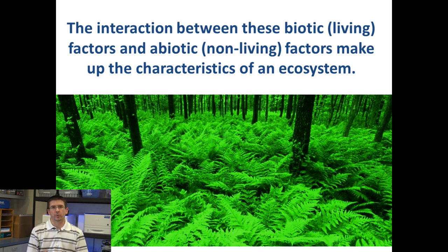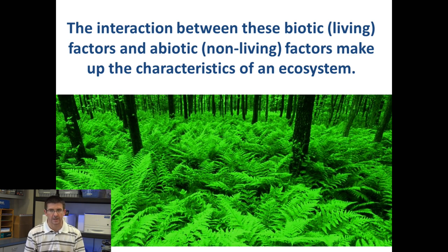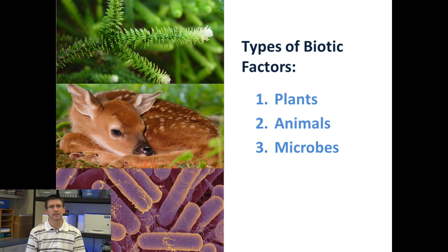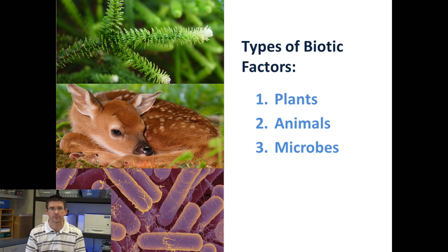We also have another word for these things, and that's biotic and abiotic factors. When we talk about biotic factors in an ecosystem, that's the living things — bio meaning life — and abiotic meaning things that are not alive. These biotic factors in an ecosystem include plants, animals, and microorganisms or microbes, which are the small, single-celled organisms that live in an ecosystem.